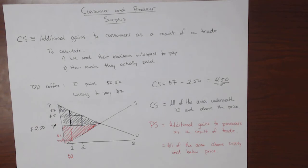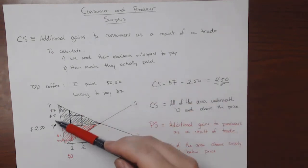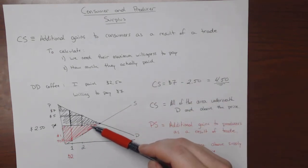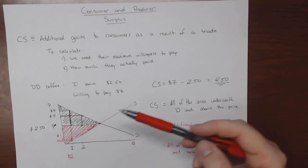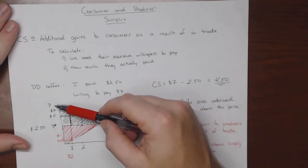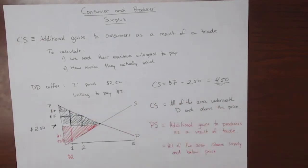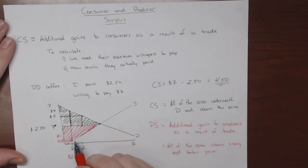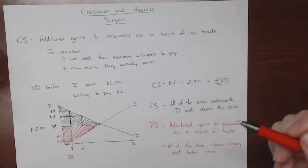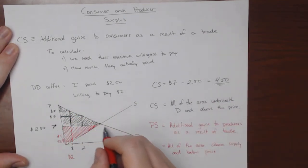If we think about this, it shows us all the gains from trade. The triangle up here is all the consumer gains, and the triangle down below is all the producer gains. The size of the total big triangle — the total surplus — is going to equal the producer surplus plus the consumer surplus, or all the gains from everybody in society.